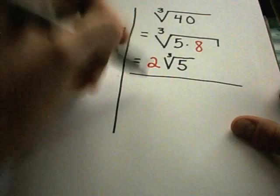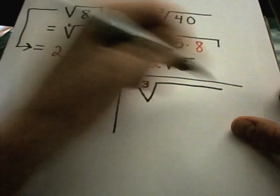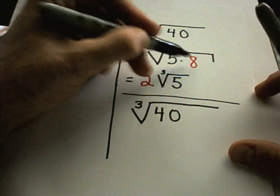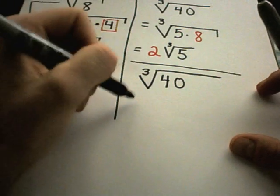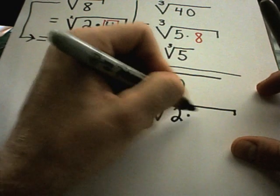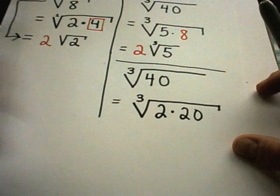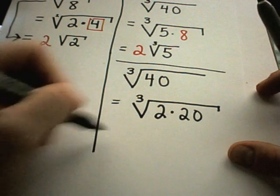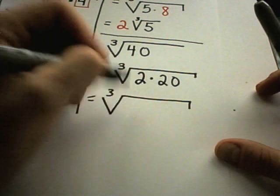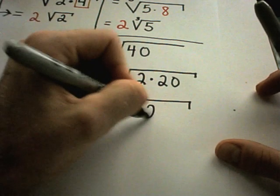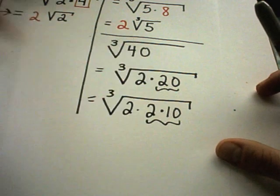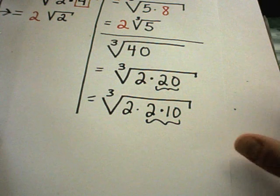Another way to do these problems: suppose I have the cube root of 40 again. Suppose I didn't factor as 5 times 8. Suppose instead I said 40 is even, so I'll write it as 2 times 20. I can't take a cube root of either number, but I can keep factoring. 2 doesn't factor down, but 20 can be written as 2 times 10.